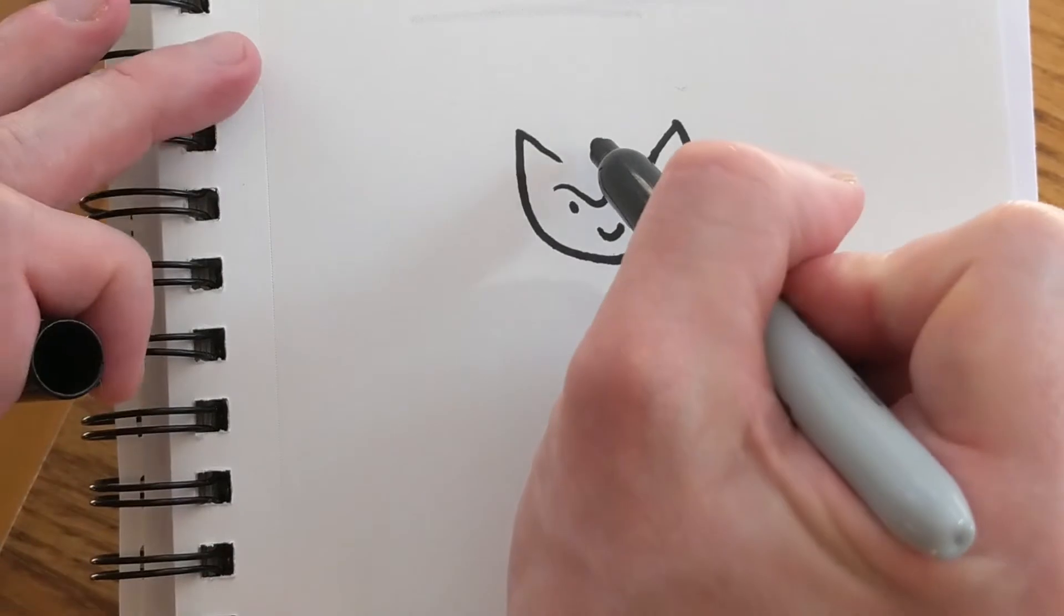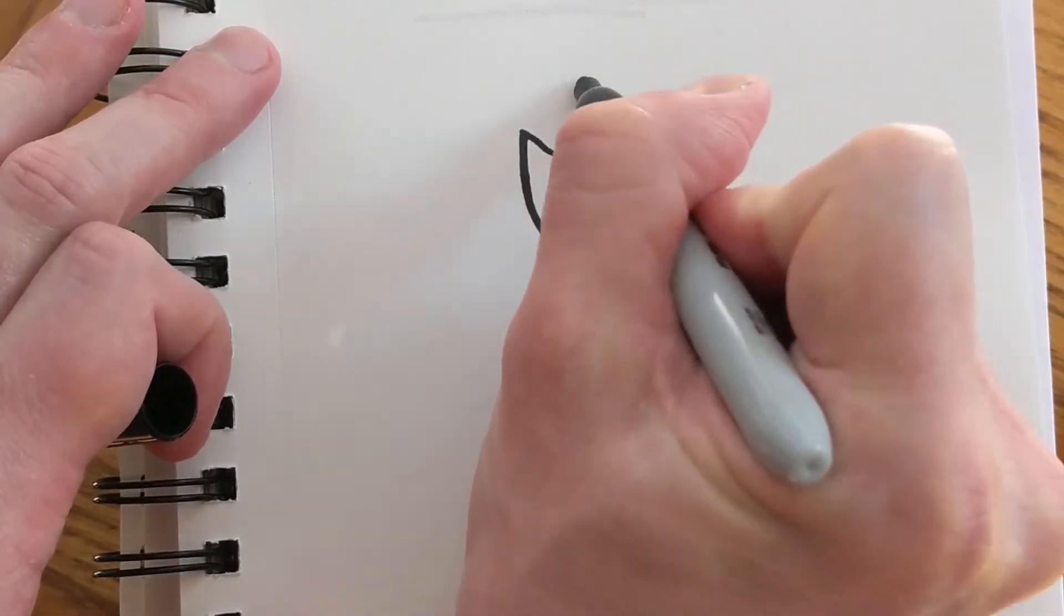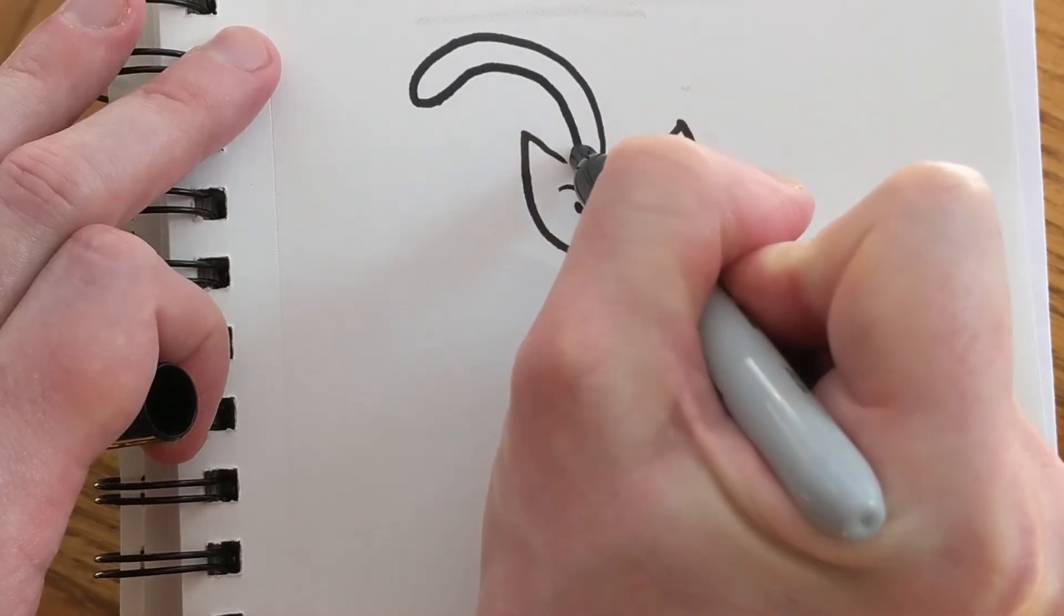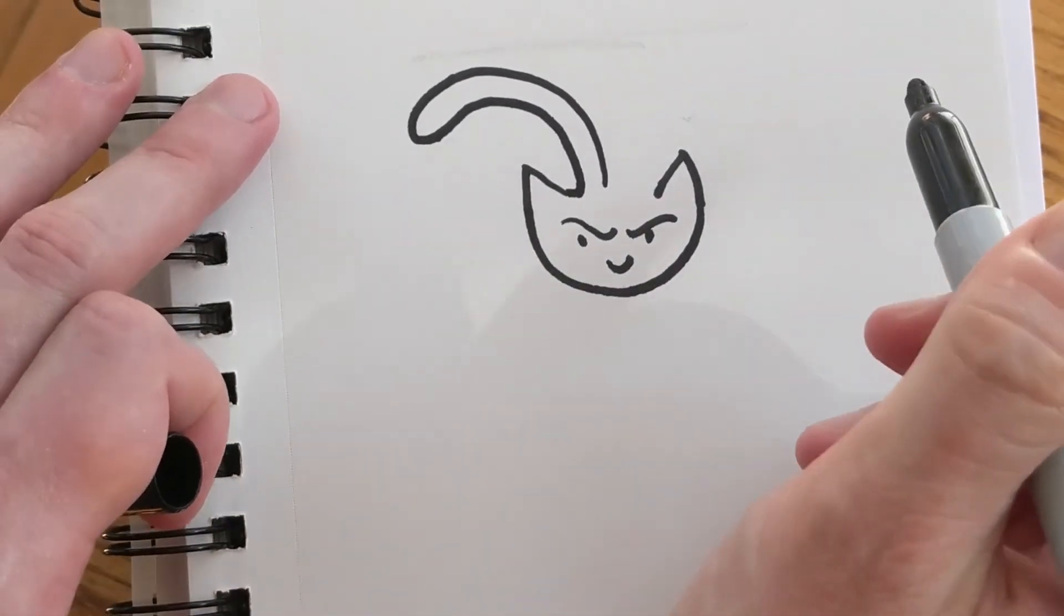Now I'll draw her bunny ears. And those are just two curves. So that one will be in front.